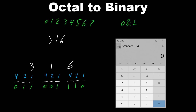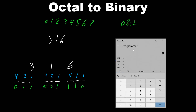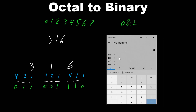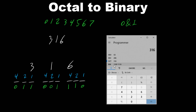Let's double-check the answer. Changing the view from standard to programmer view, making sure octal is selected, and entering 3 1 6. The calculator gives us the binary number: 0 1 1 1 0 1 1 1 — and then 0 0 1 1 0 0 1 1. The leading zero to the left doesn't count.